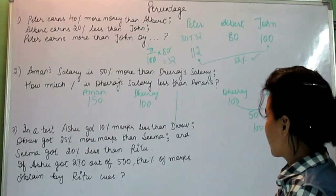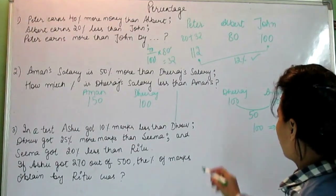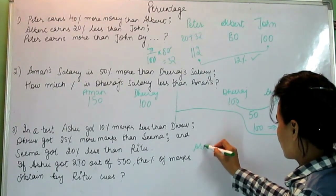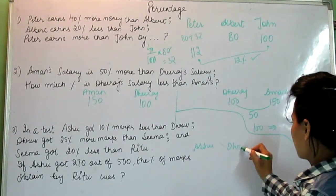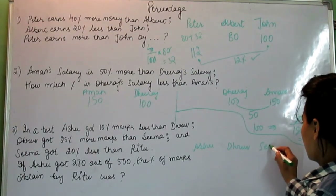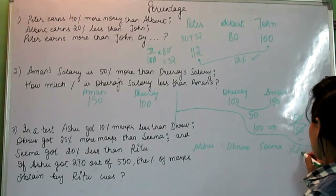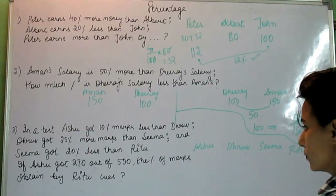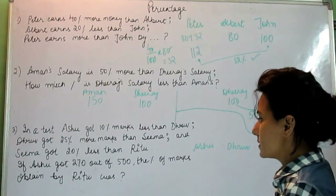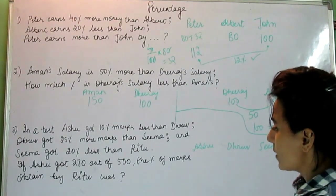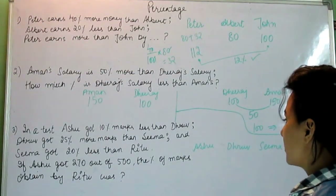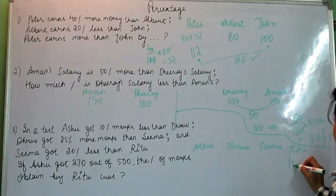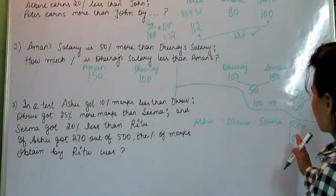The third question: In a test, Ashu got 10% marks less than Dhru. Dhru got 25% more marks than Sima. And Sima got 20% less than Ritu. If Ashu got 270 out of 500, what was the percentage of marks obtained by Ritu? We put Ritu at 100% and start solving from the end.